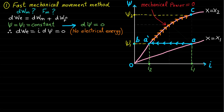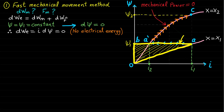To find the change in field energy DWF, we need to find the field energy at point A and at point A-dash. The field energy at point A is equal to the yellow area OABO, represented by WF1. The field energy at point A-dash is equal to the orange area OA-dash-BO, represented by WF2. The change in field energy DWF is equal to the difference between WF2 and WF1.